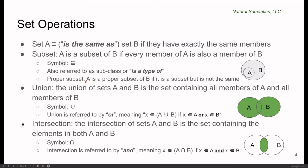And finally, proper subset. A is a proper subset of B if it's a subset, but it's not the same. So in our case here, A is a proper subset of B because it's not the same as B. That is, there are members of B which are outside of A.